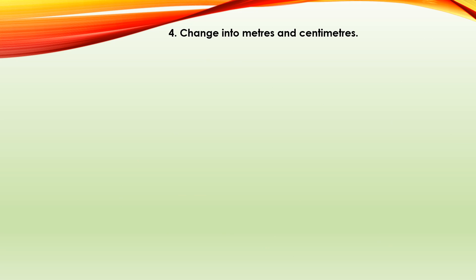Question four: change into meters and centimeters. Here you have to change centimeters into meters and centimeters — going from a smaller unit to a bigger unit. You know 100 centimeters make 1 meter. Because the question is given in centimeters, divide by 100. For 318 centimeters divided by 100, you get 3 meters 18 centimeters. Count the two zeros on the denominator — take the last two digits of the numerator as the centimeter part and the remaining digits as the meter part. So, 18 centimeters and 3 meters. The quotient part is always the bigger unit and the remainder part is the smaller unit.